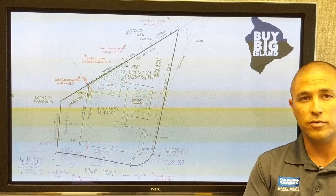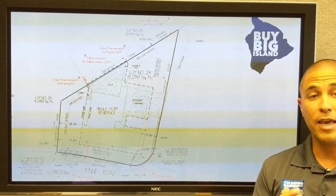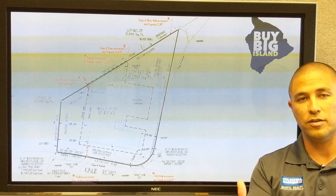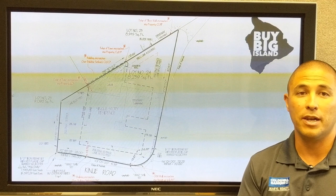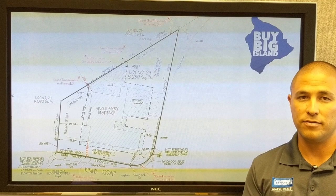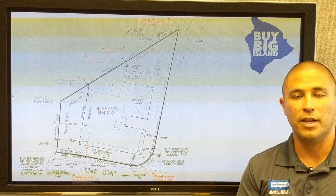Staking and surveys are most of the time a seller cost — the seller is providing this to show that their property doesn't have any issues, though that can be negotiated. There are situations where the seller doesn't want to pay for a full survey because it's more expensive than a staking, so they'll offer to pay for a staking and the buyer pays the additional cost for a full survey. The cost can be significant — a thousand to two thousand dollars — depending on the size of the property. A survey company will give you a quote based on size, how overgrown it is, and how much brush needs to be cut to find the property lines.